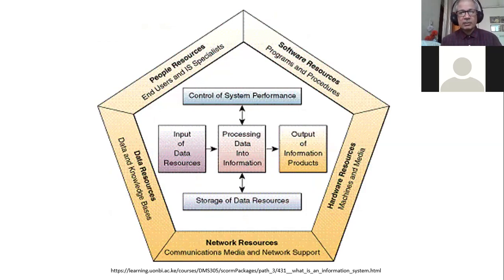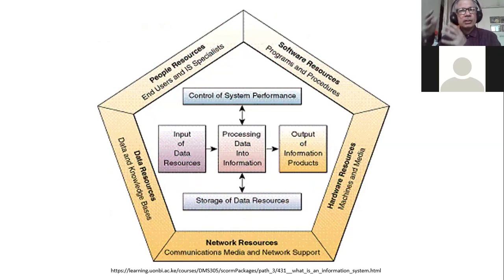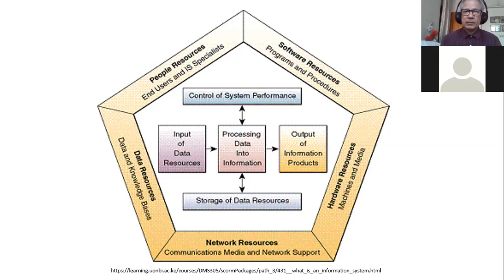We have storage space — the hard disk on which our data is stored. You need all these things to work: people resources, software resources, hardware resources, network resources, and data resources. For data resources we need certain storage where the data will be stored. In a computer or banking machine, data is stored. Data can be stored in two places: either the local disk of the computer or in the cloud, like Google Drive or Dropbox — these are cloud storage spaces.